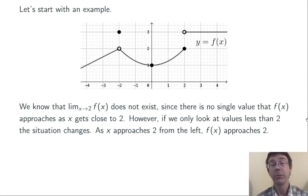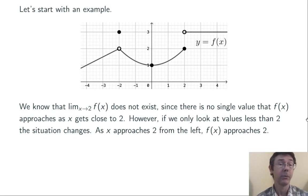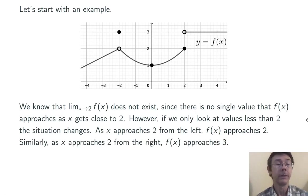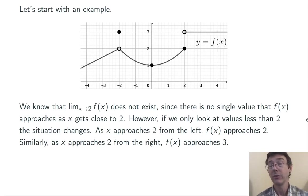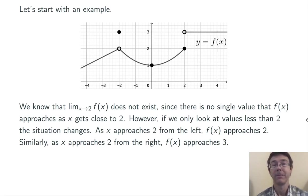As x approaches 2 from the left — so x is always less than 2 — f of x is approaching 2. Similarly, if we restrict our attention so that x is greater than 2, as x gets closer and closer to 2 from the right, f of x gets closer and closer to 3. In fact, it's always 3 from the right.